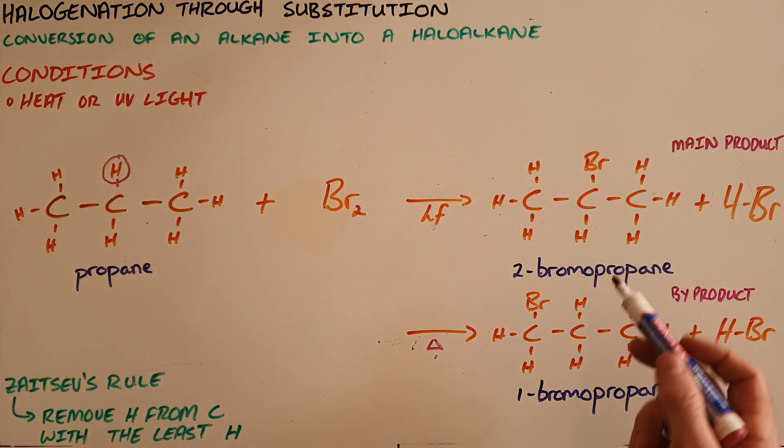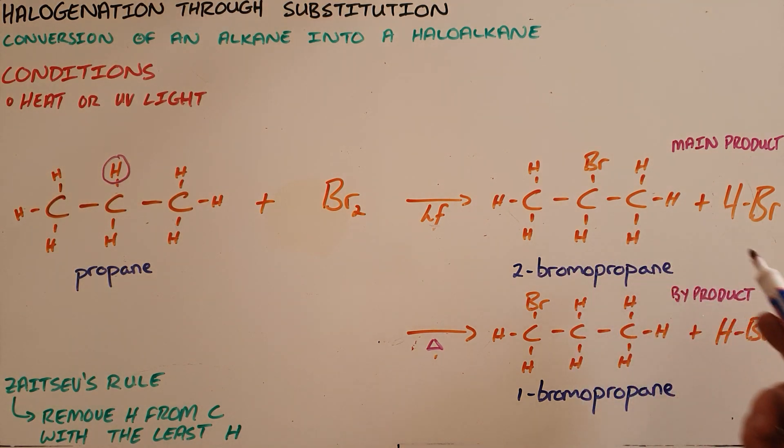This makes the main product two-bromopropane, and the byproduct one-bromopropane. And again, when we write this reaction down, we only need to include the main product and hydrogen bromide for the halogenation through substitution reaction.